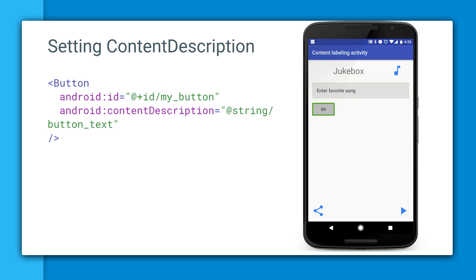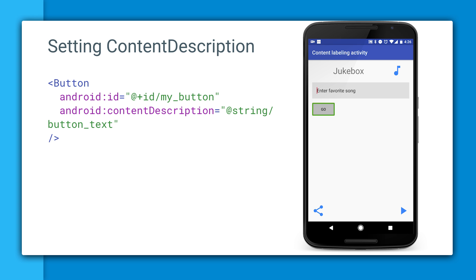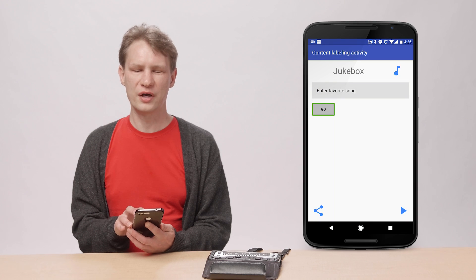The primary way in which you can attach alternative text description for your UI elements to be spoken by TalkBack is by using an Android attribute called content description. If you don't provide content description for an image button, for example, the experience for a TalkBack user can be jarring.